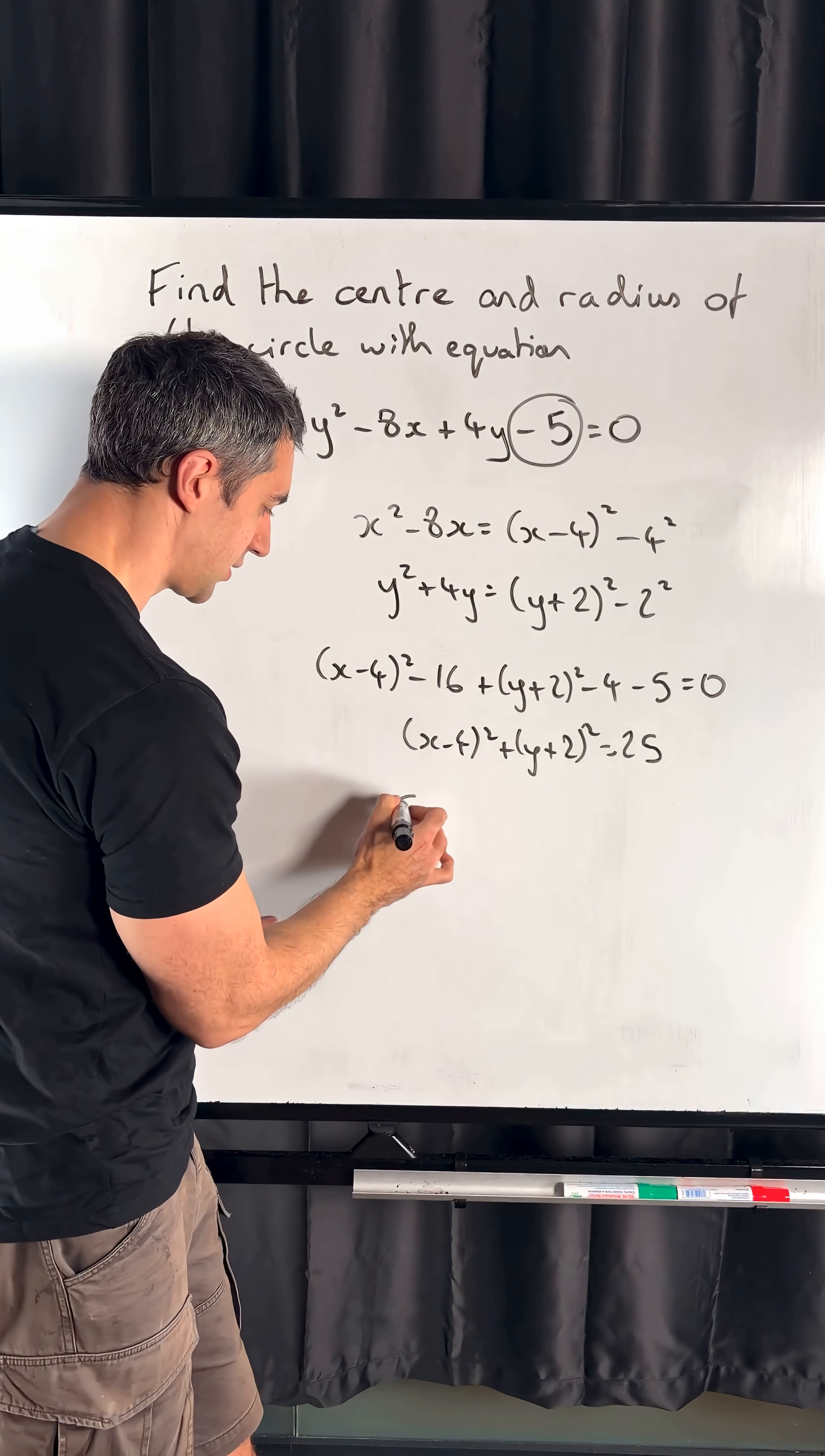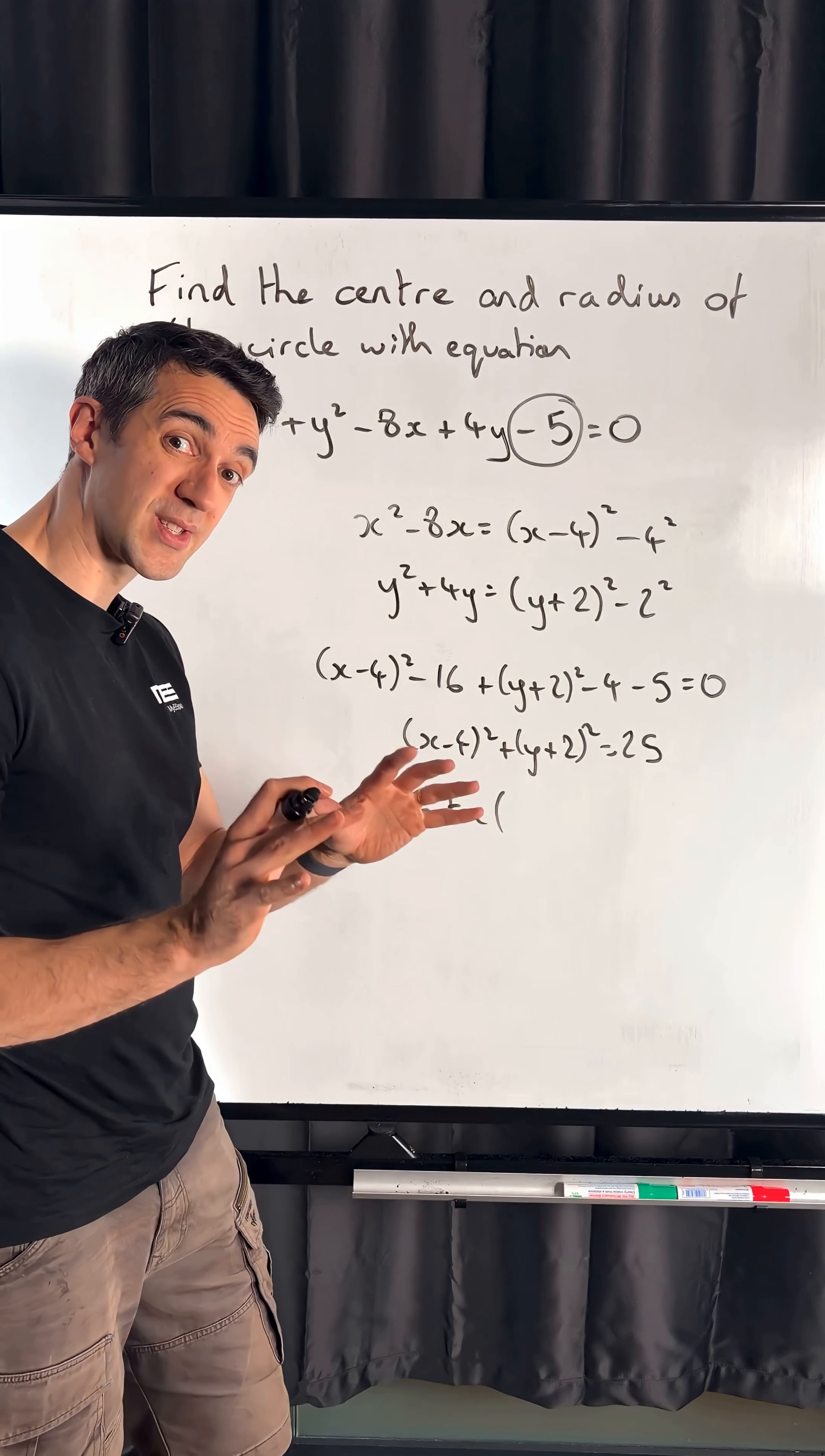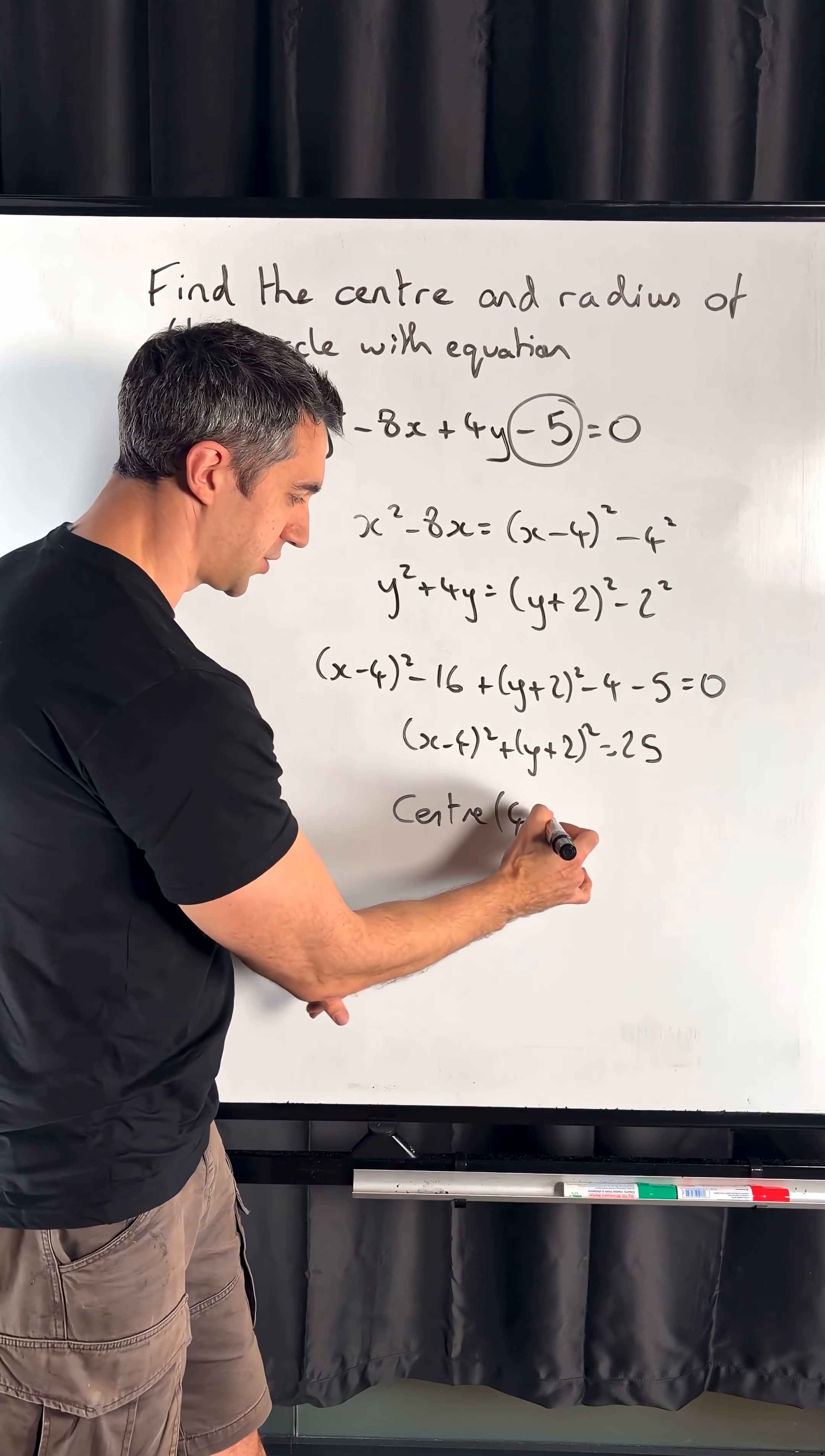That means now we can read off our center and radius. So our center coordinate is going to be the numbers inside these brackets with the signs reversed. So x is going to be 4 because it was minus 4, and then y is going to be minus 2.